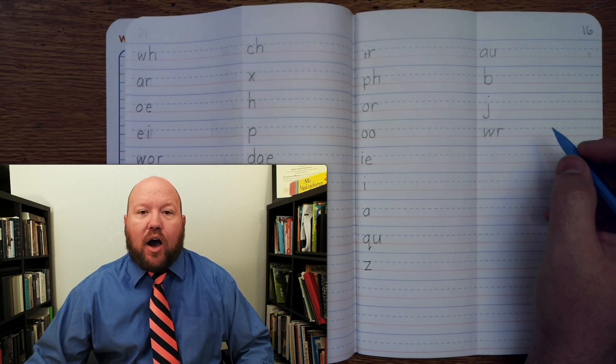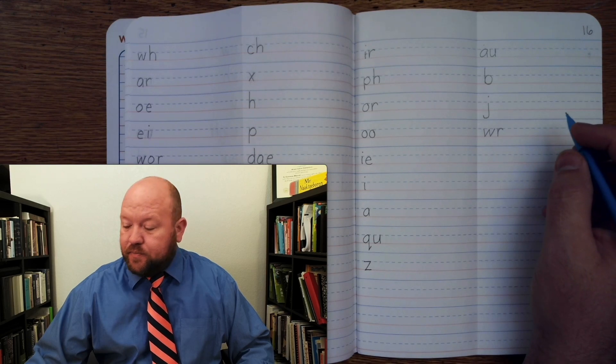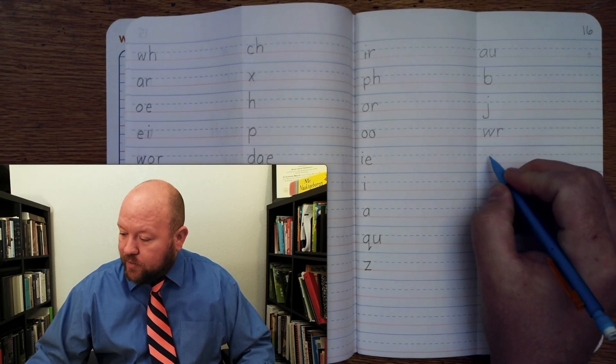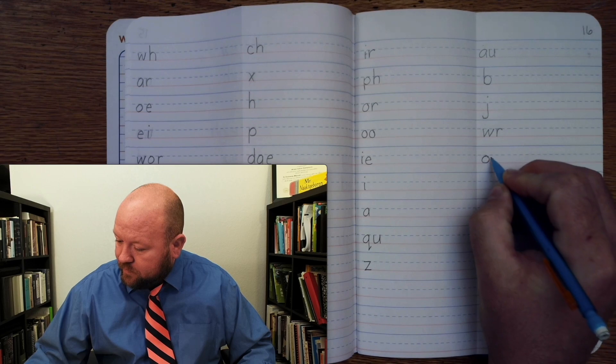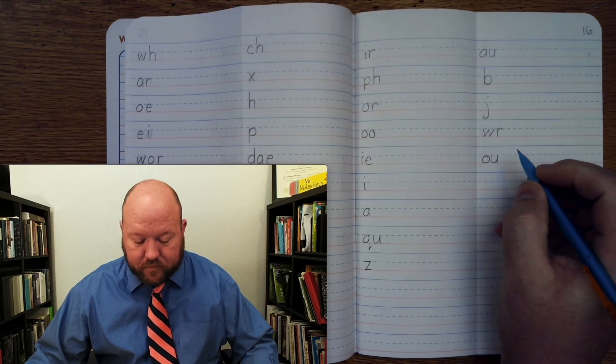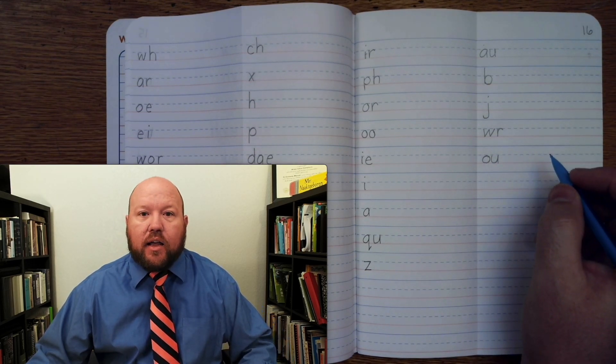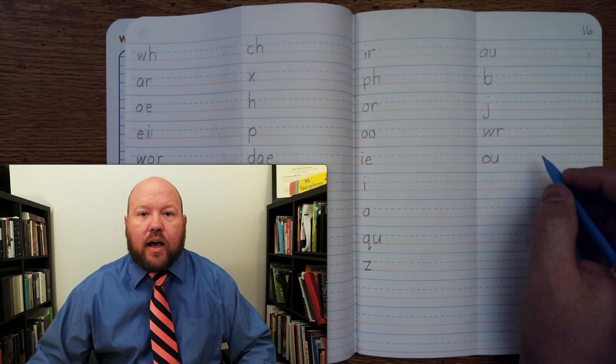Next one, ow, ow, oo, uh. Ow, ow, oo, uh. Next one, yuh, iuh, i. Yuh, iuh, i.